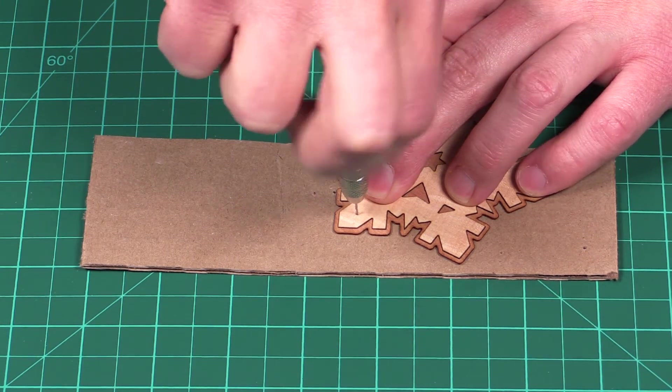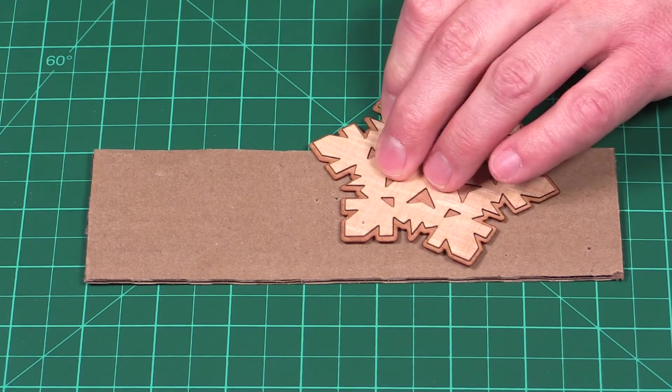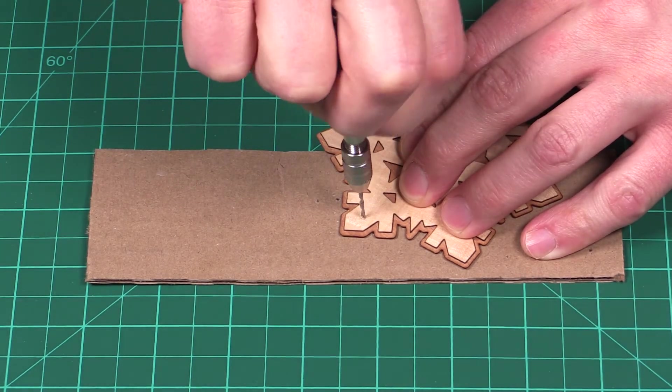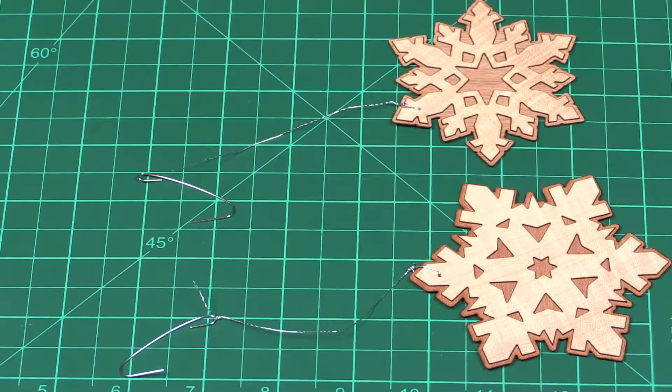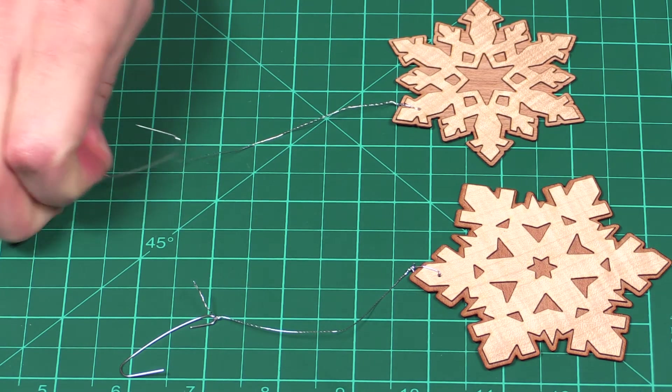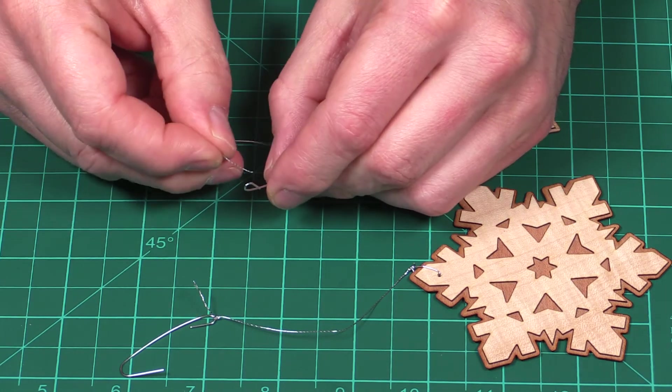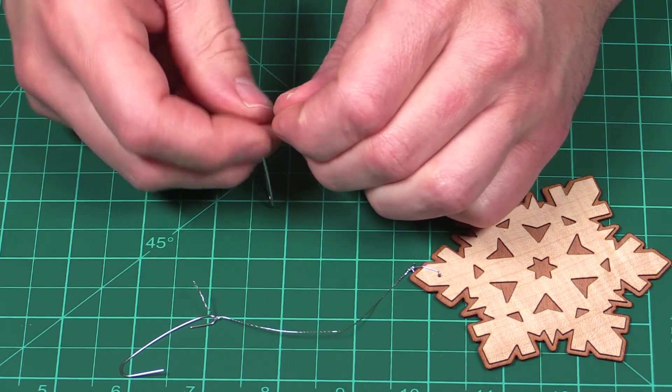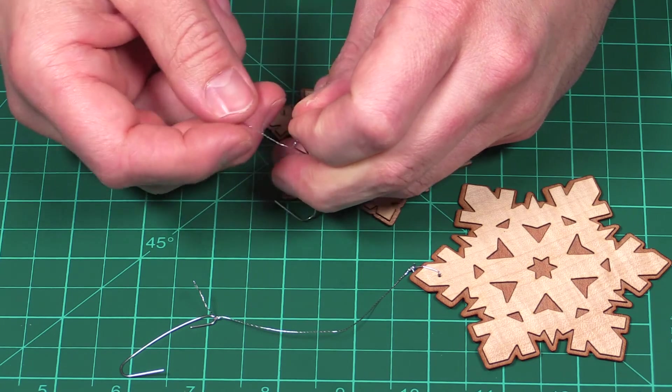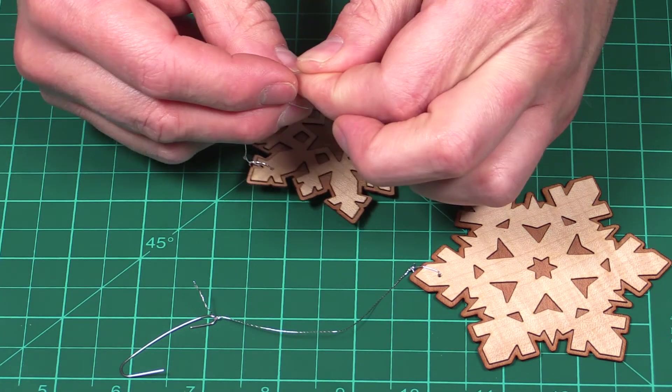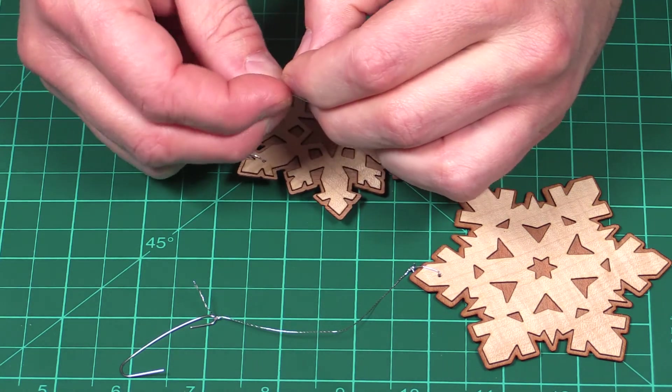Once I got all my holes drilled, I attached some silver thread to each of the snowflake ornaments, and then I got some of these metal Christmas ornament hooks from the local store and I attached that to each of the silver threads.